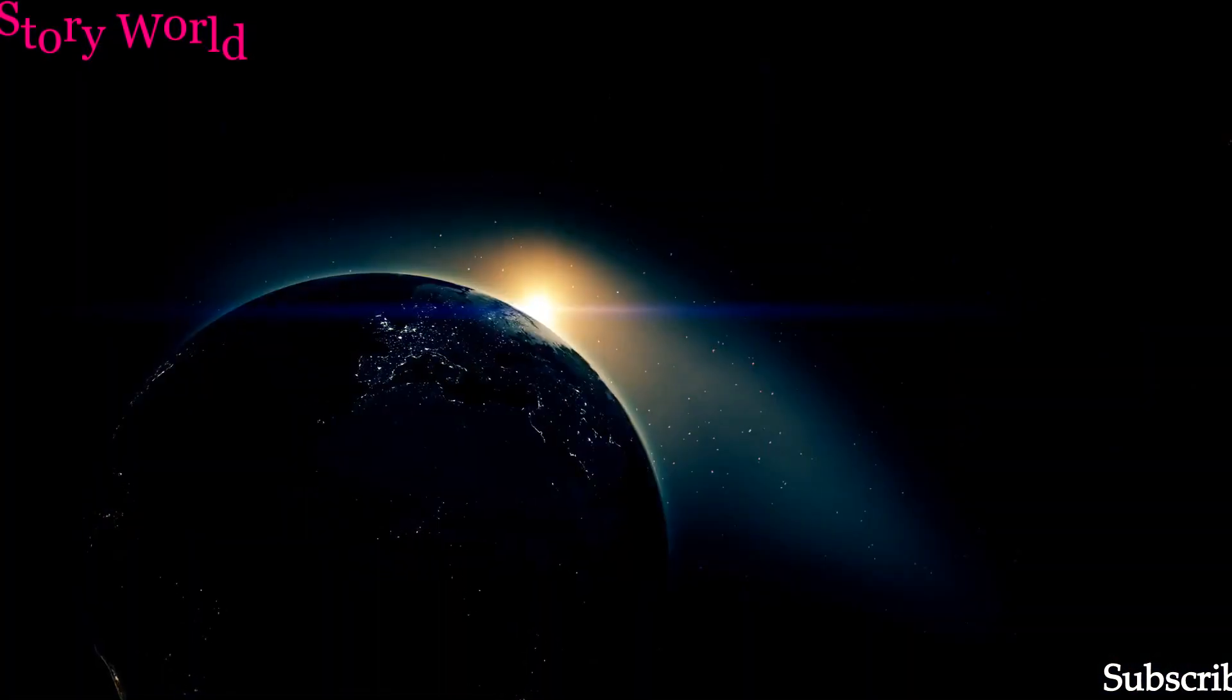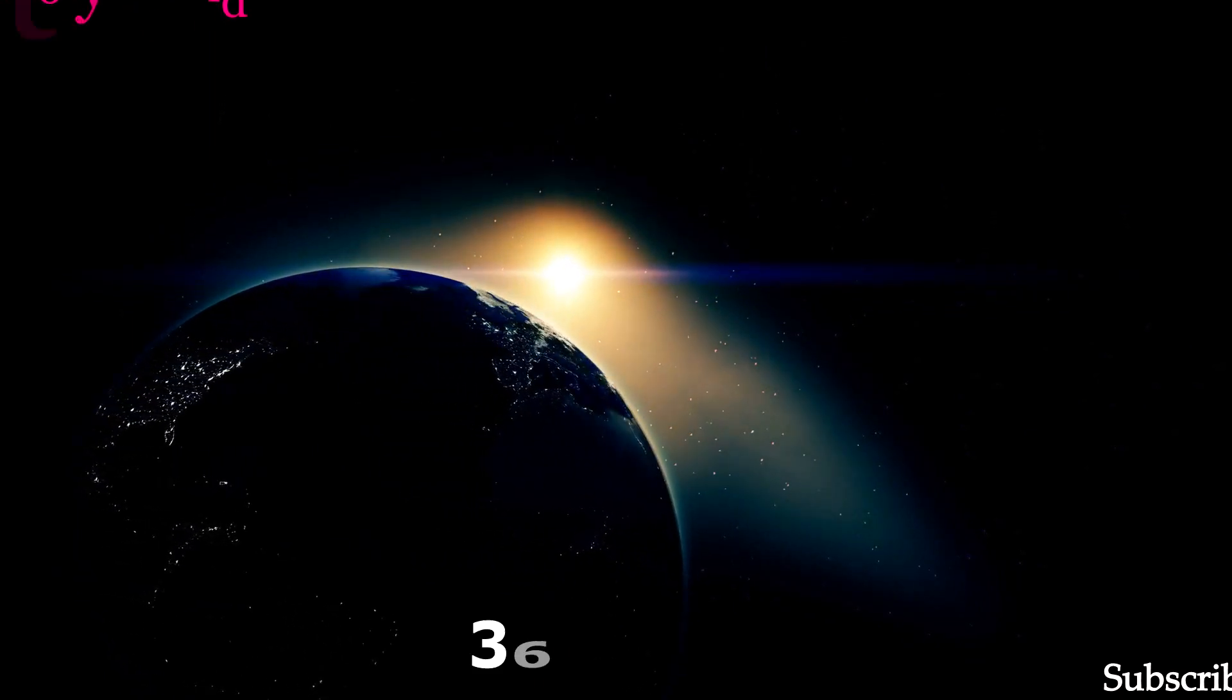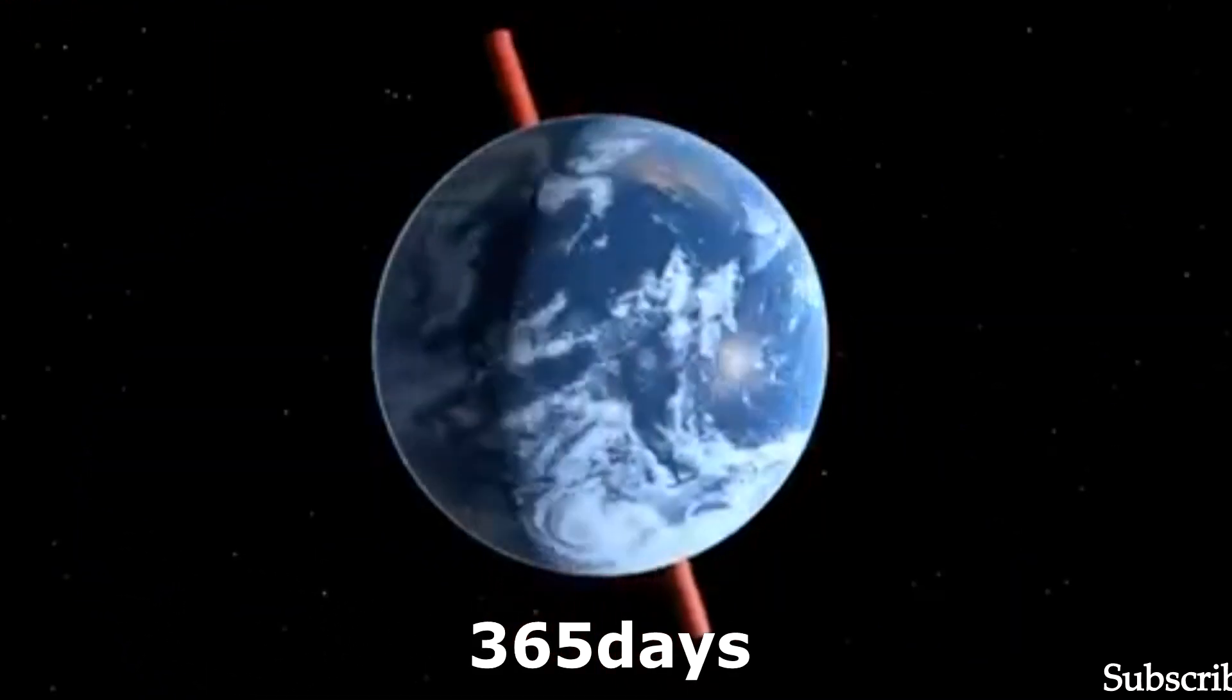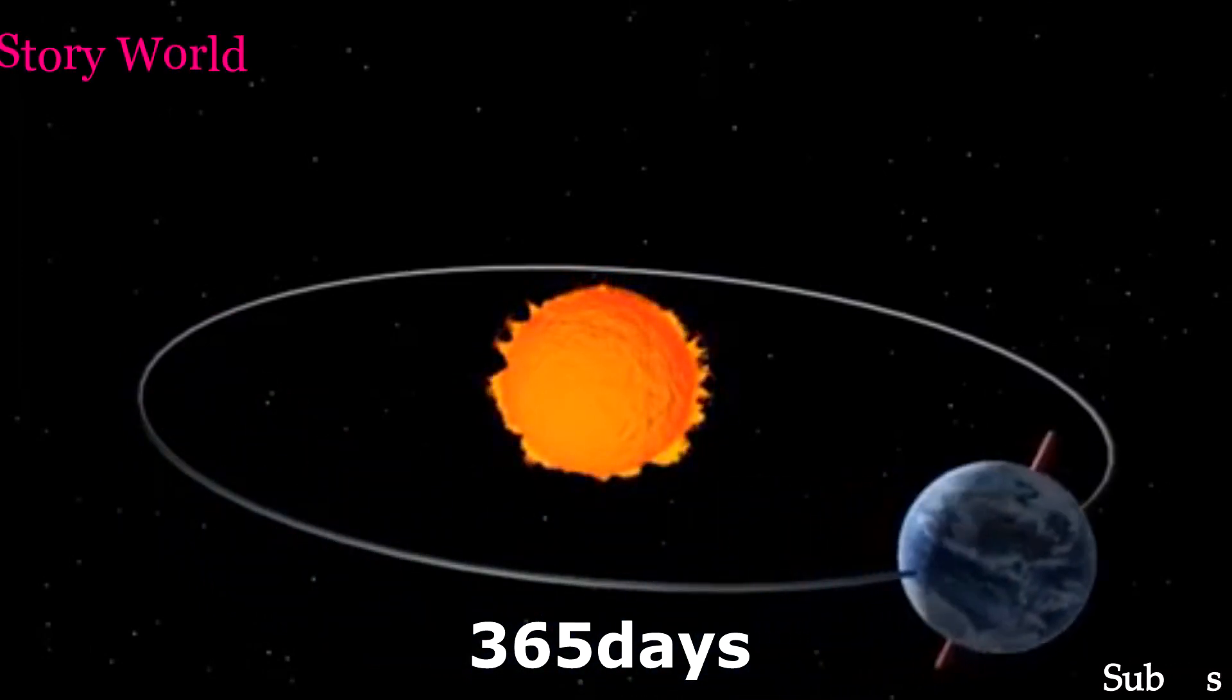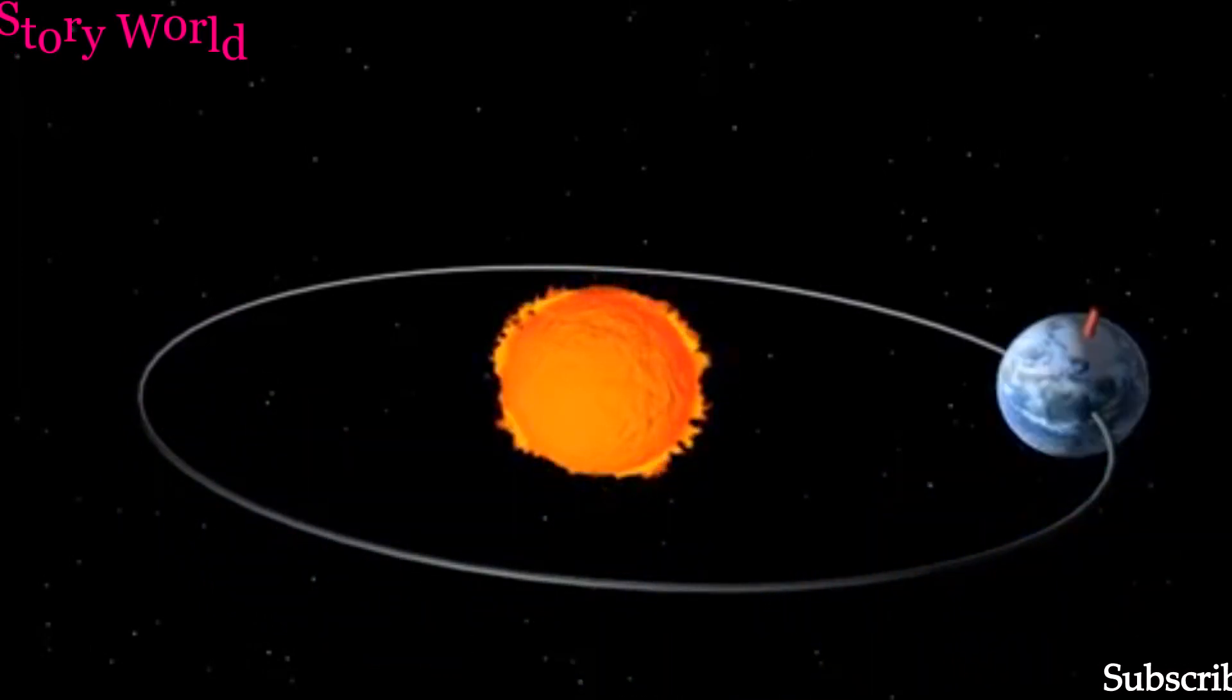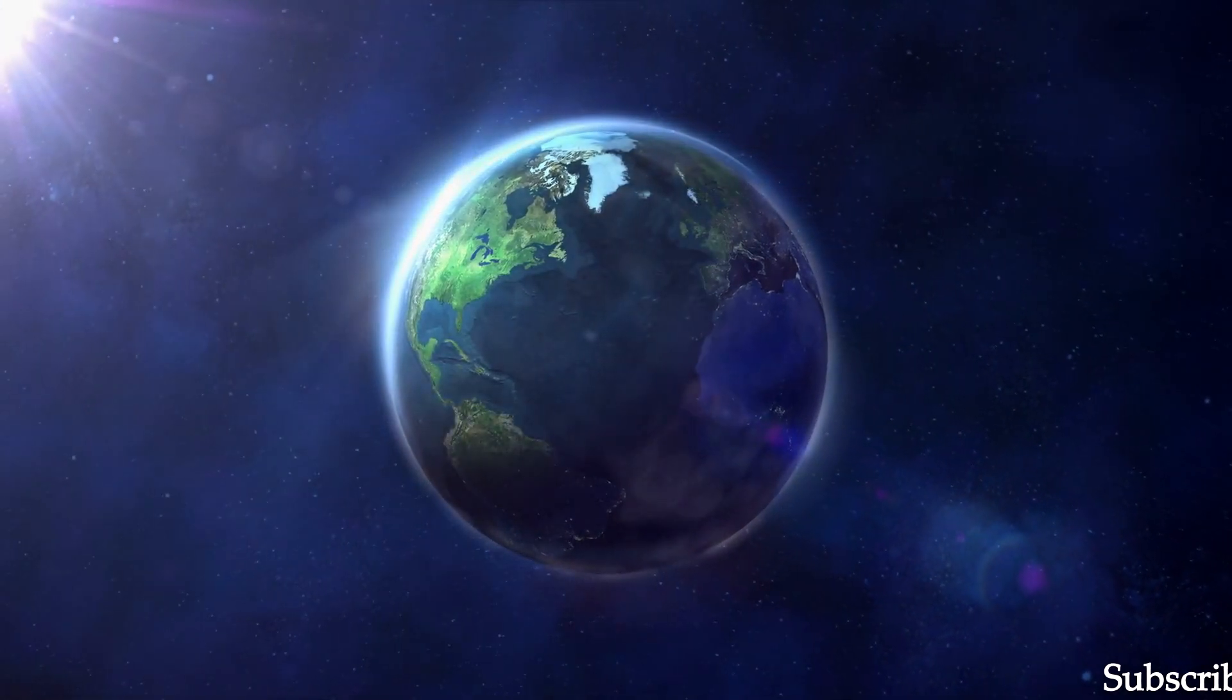In space, Earth revolves around the sun. It completes one orbit in 365 days and this time is known as the Earth year.